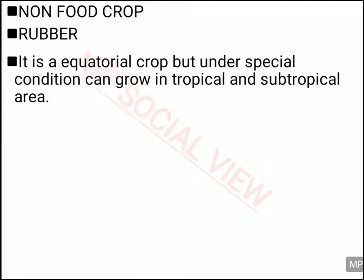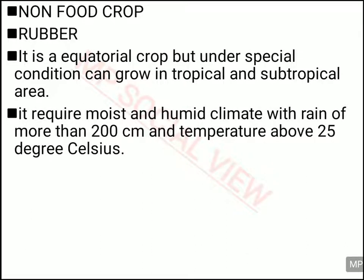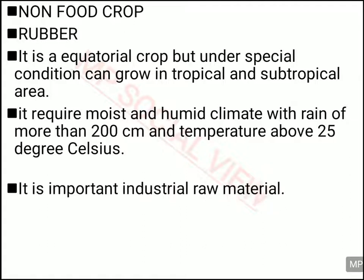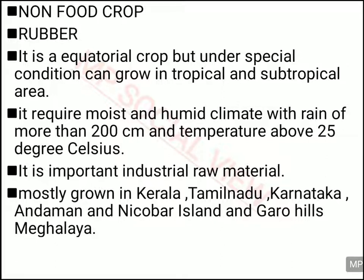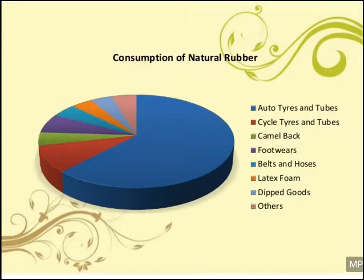Now we are going to discuss some non-food crops. First, rubber — which is actually an equatorial crop but can be grown in tropical and subtropical regions under special conditions. It requires moist and humid climate with rainfall more than 200 cm and temperature above 25 degrees Celsius. Rubber is a raw material for the rubber industry, produced in Kerala, Tamil Nadu, Karnataka, Andaman and Nicobar Islands and Garo Hills of Meghalaya. In 2013-14, India stood fourth in production of natural rubber. Rubber is used for tires and tubes of automobiles, cycle tires, footwear, belts and many other purposes.